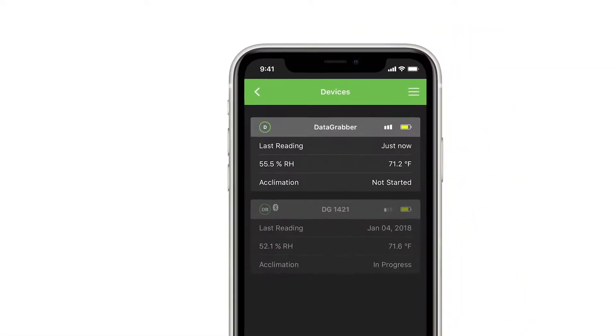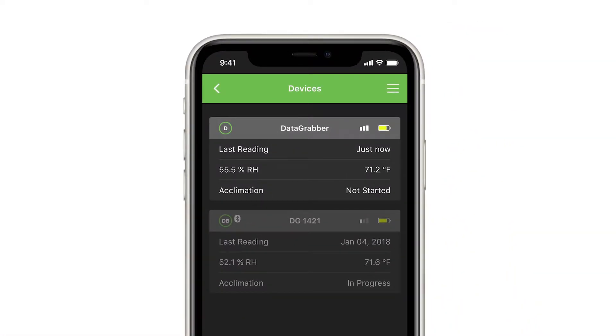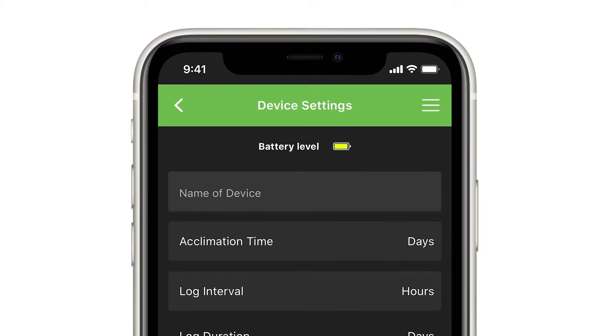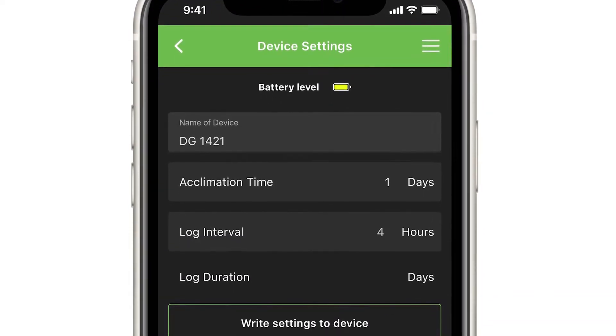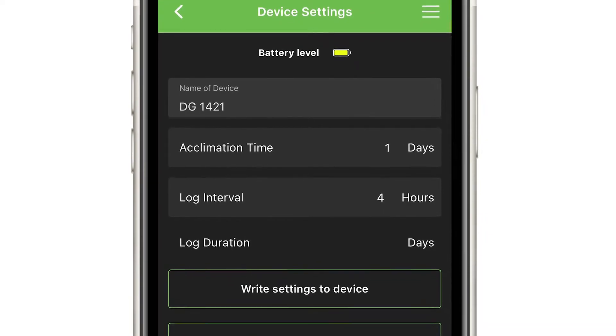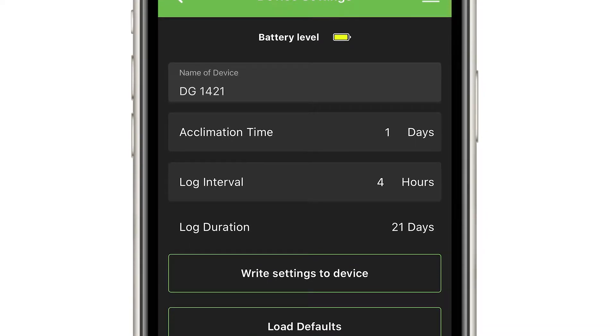When activated, it will appear on the list inside the Devices screen of the Datamaster app. Select the device and choose settings to name the device, view acclimation time, and set the interval time for the Data Grabber to periodically activate the L6 smart sensor and record time-stamped readings.